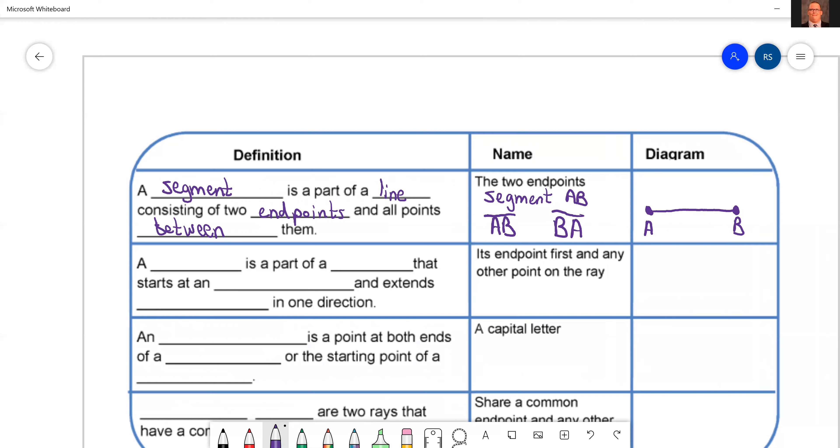Then we have a ray. A ray is a part of a line that starts at an endpoint. So it's got a starting point.